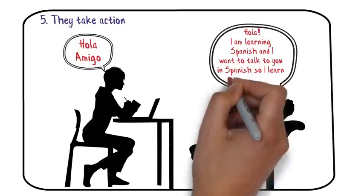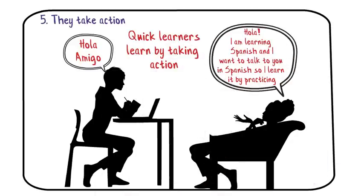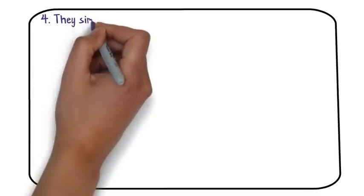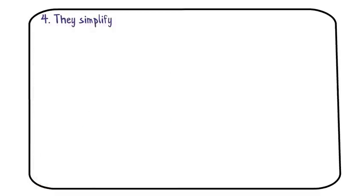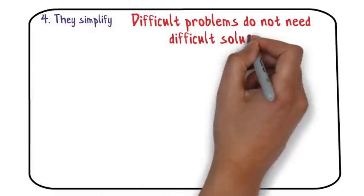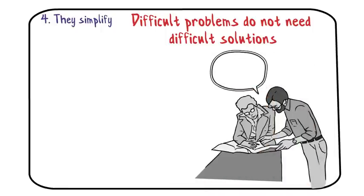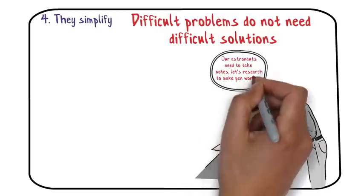Number four: they simplify. Quick learners know that difficult problems do not necessarily need a difficult solution. There is a story about NASA investing a lot of money in researching how to make a pen work in space. Now that's a big problem to solve, right? Astronauts need to write down some things.